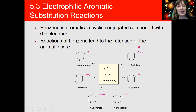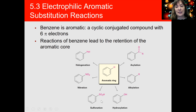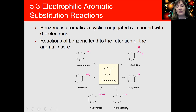Depending on what you're substituting, you will get different reactions. For example, we have halogenation, where we substitute a hydrogen with a halogen. We also have nitration, where we introduce a nitro group to the ring; sulfonation, where we create benzene sulfonic acids; and a hydroxylation reaction where we add an OH group. For the sake of time, I'm going to leave hydroxylation out — we're not going to consider it for our third exam or final. We also have alkylation and acylation reactions.